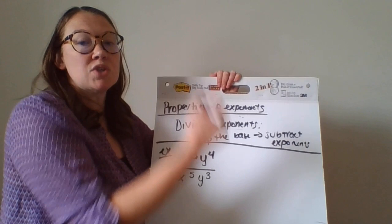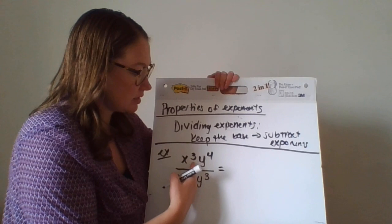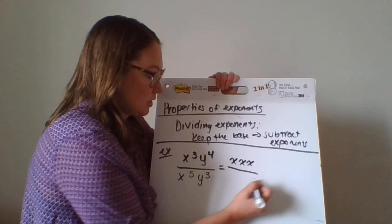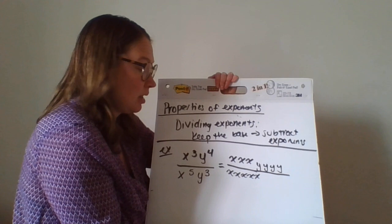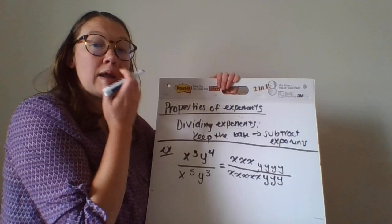So if I expand this out like we talked about in the last one, this just means that I'm going to have three x's on top and five x's on the bottom. And I'm going to have four y's on top and three y's on the bottom.